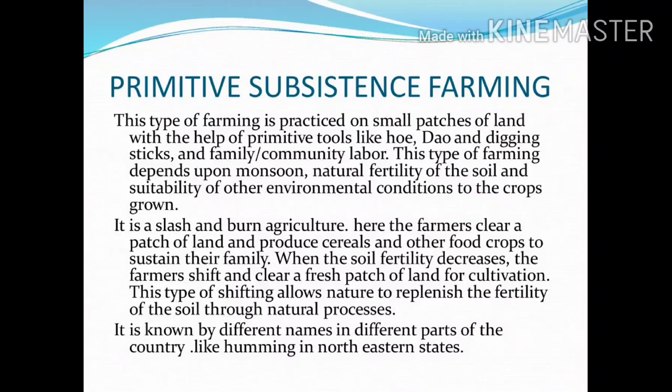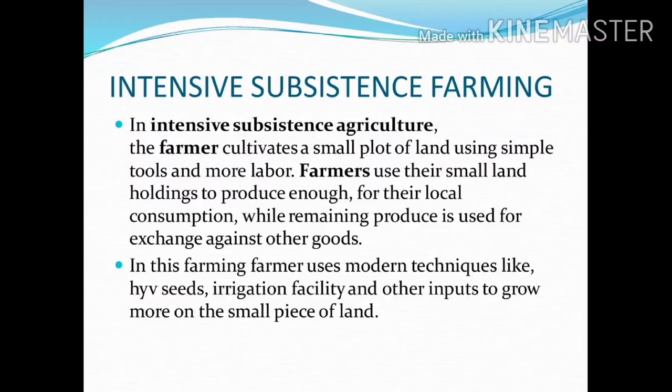Next is intensive subsistence farming. In intensive subsistence agriculture, the farmer cultivates a small plot of land using simple tools and more labor. Farmers use their small land holdings to produce enough for their local consumption, while the remaining produce is used for exchange against other goods. In this farming, the farmer uses modern techniques like HYV seeds, irrigation facilities, and other inputs to grow more on a small piece of land.